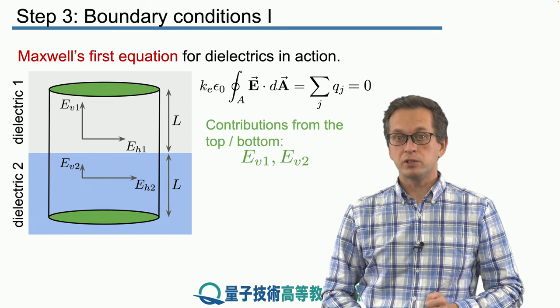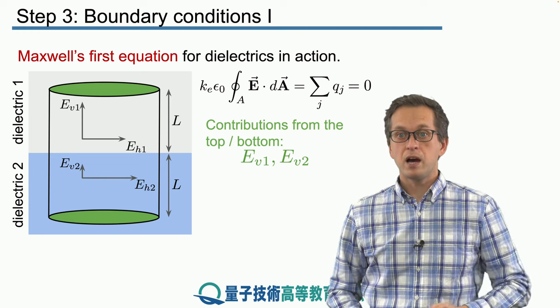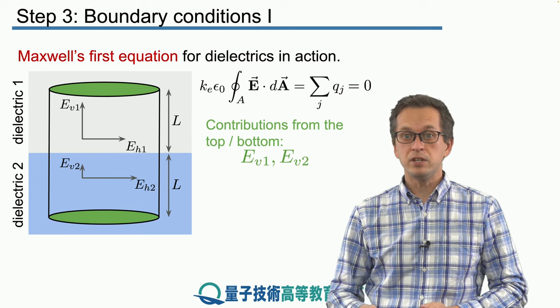Therefore, the only contributions to the top and the bottom of the cylindrical surface are going to come from eV1 and eV2.